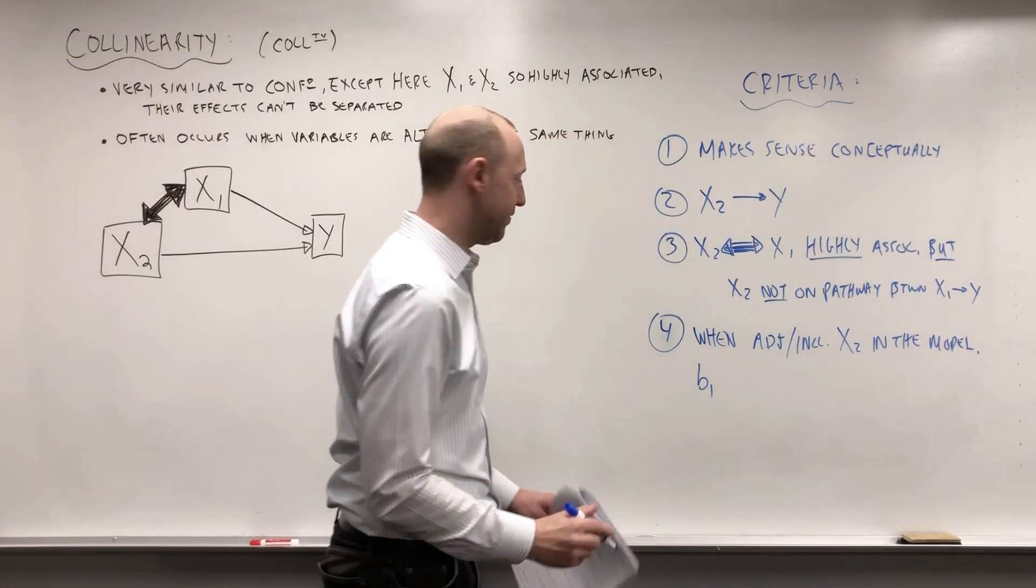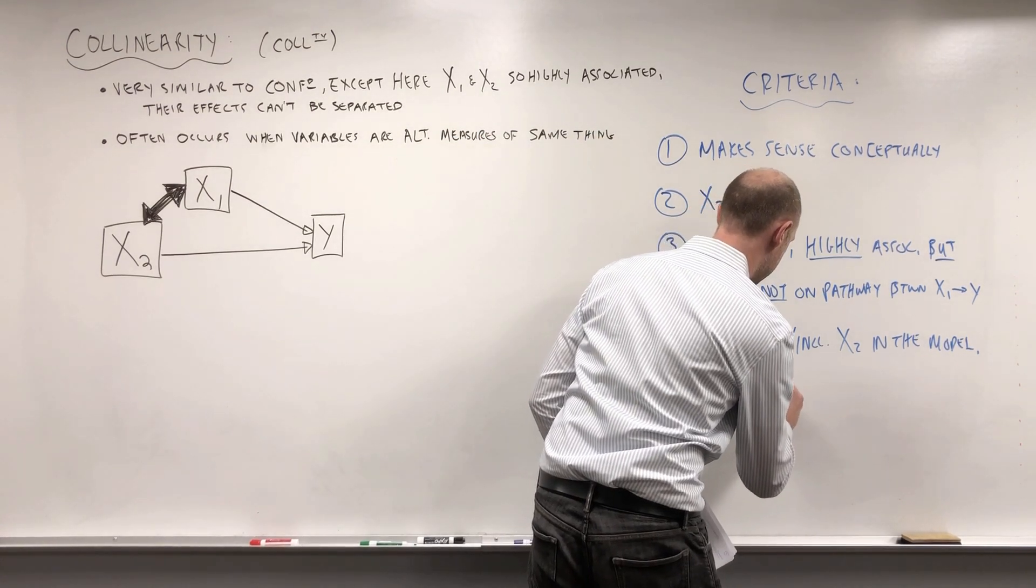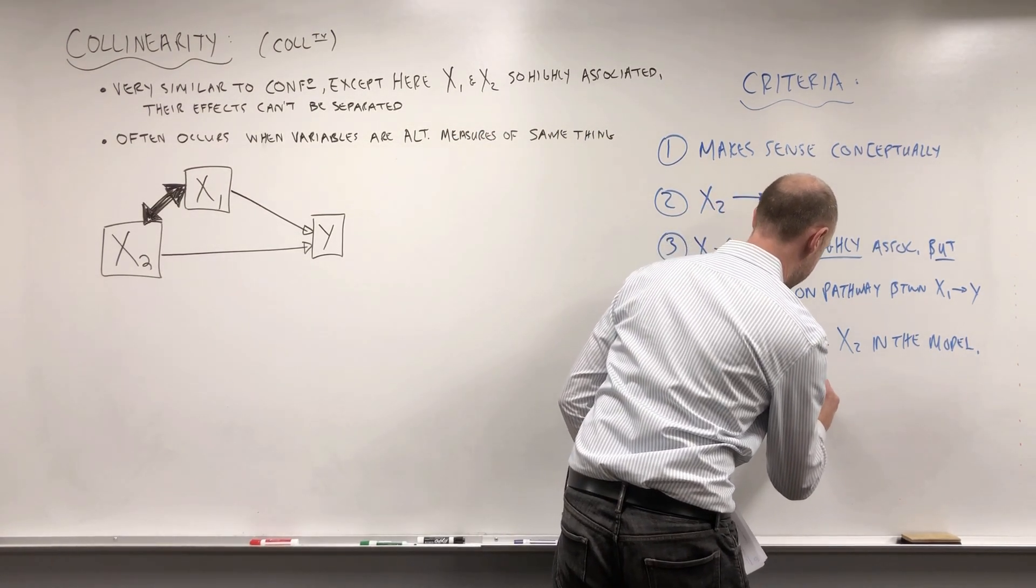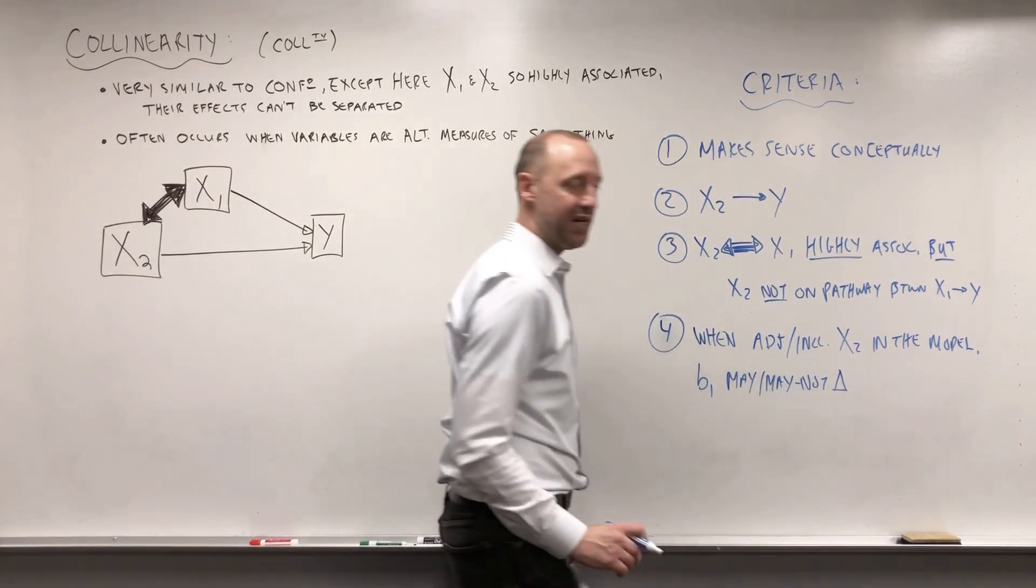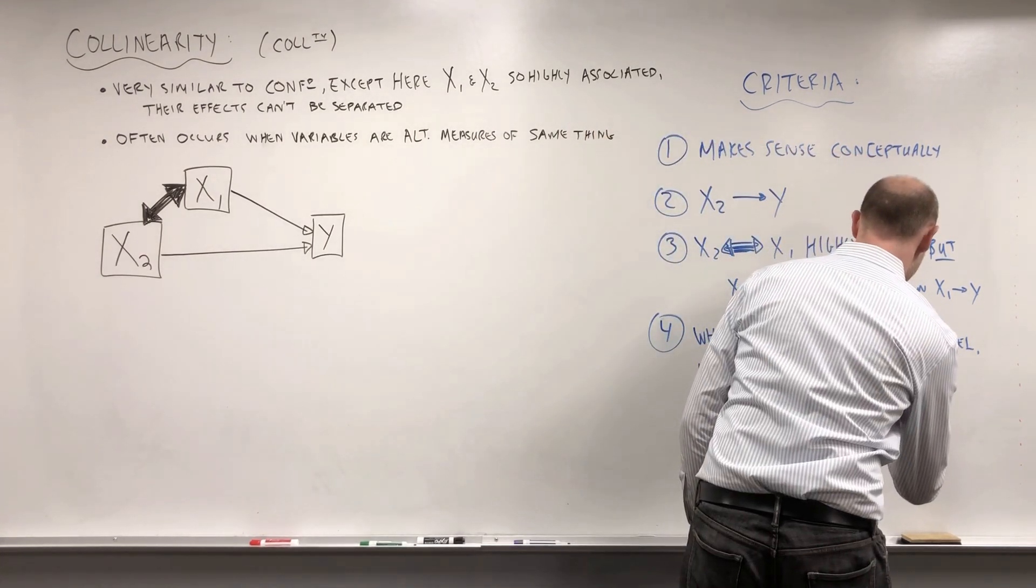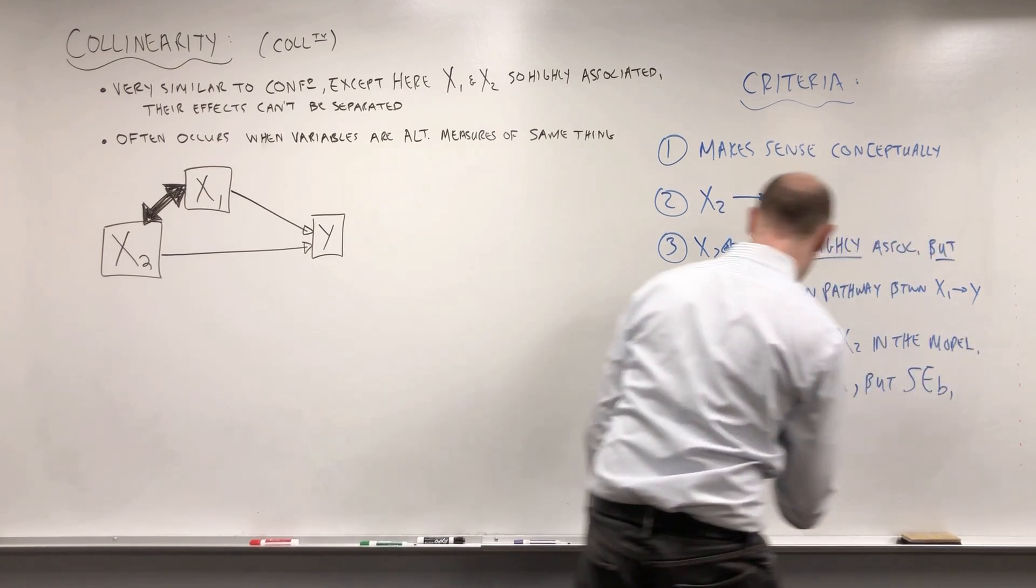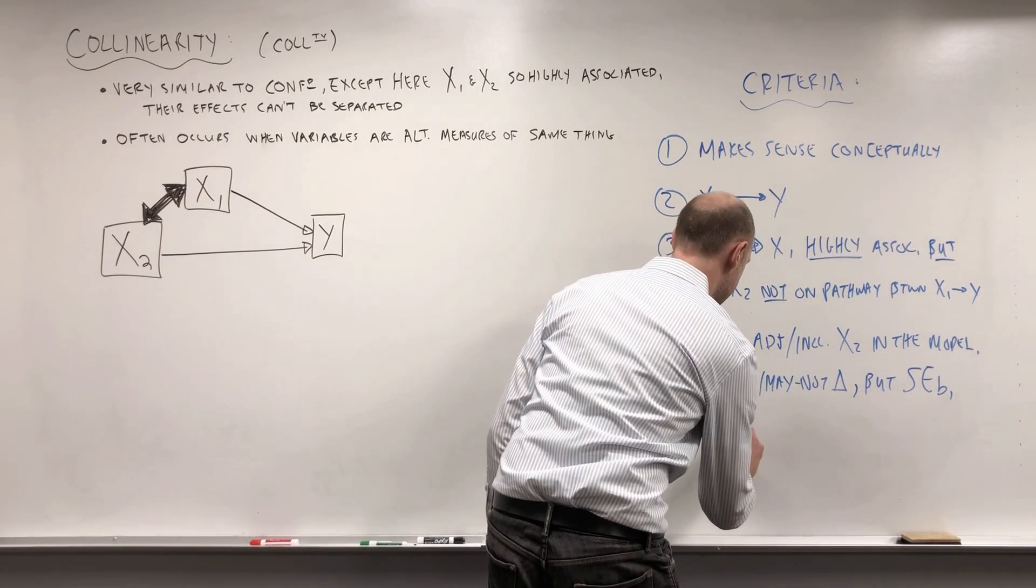When we adjust or include X2 in the model, b1, the coefficient of interest, may or may not change. But the real numeric indicator is that the standard error for b1 is going to increase a lot.